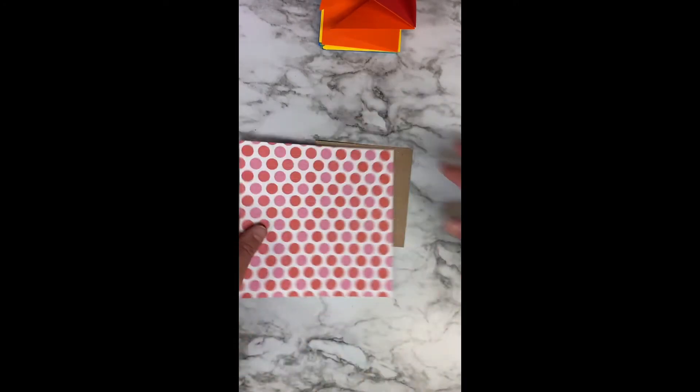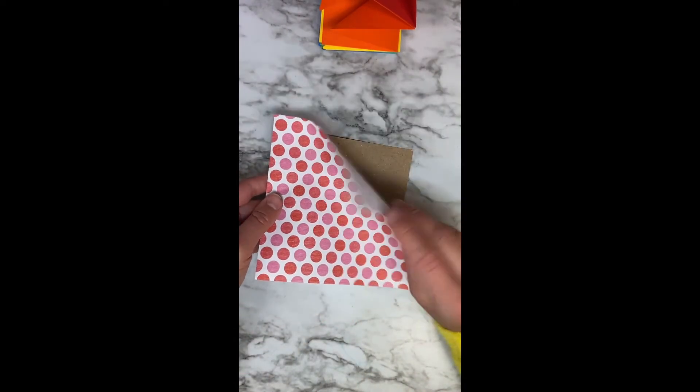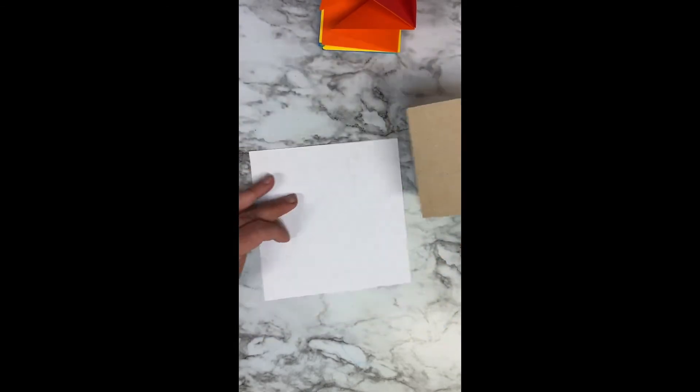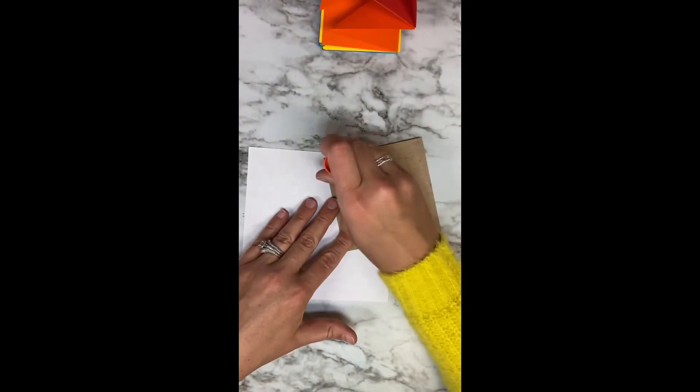So you want to take some scrapbook paper. This is not cardstock. This is the thinner paper and you want to cover one side of this with glue.